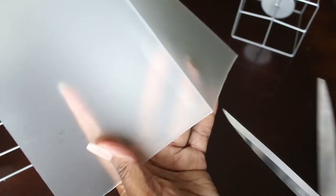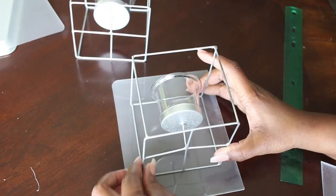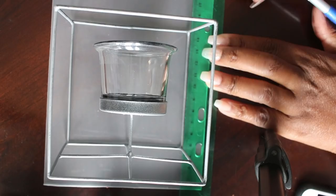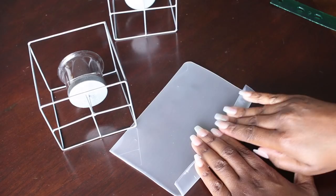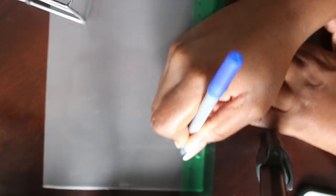Then I put the candle holders in the middle and measured each side to know where to fold. I also spray-painted the candle holders silver.